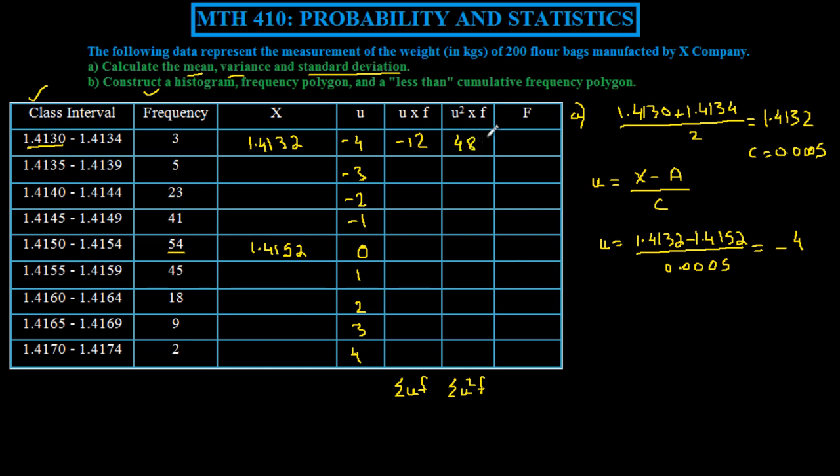Capital F stands for cumulative frequency. This column would be 3 because that is the cumulative after this interval. After this interval it's 8, 3 plus 5 is 8, then we have 23 plus 8 is 31, and so on. The last one should be 200 because there are 200 flour bags.